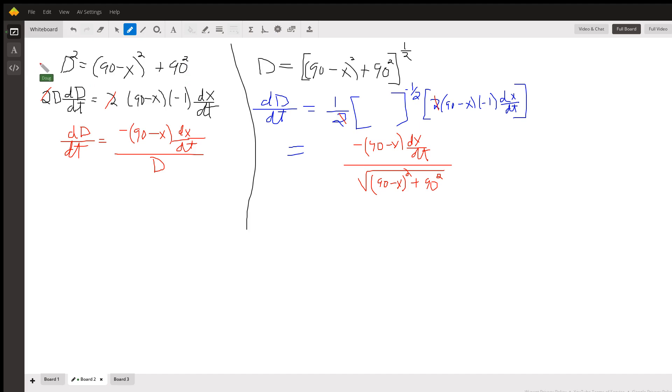I can take the derivative with respect to t right at this point. So using the power rule followed by the chain rule, I get 2 capital D times the derivative dD/dt, power rule followed by the chain rule. Bring the exponent down front, reduce the exponent by one, multiplied by the derivative of the inside.